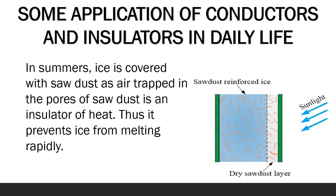In summers, ice is kept in a gunny bag or covered with sawdust, as they have fine pores in them. Air gets trapped in these pores. Trapped air is an insulator of heat, so it does not allow outer heat to reach the ice. Thus, ice does not melt quickly.